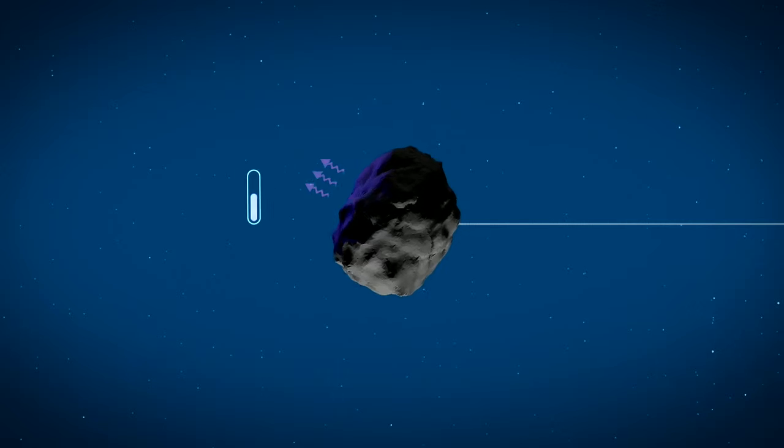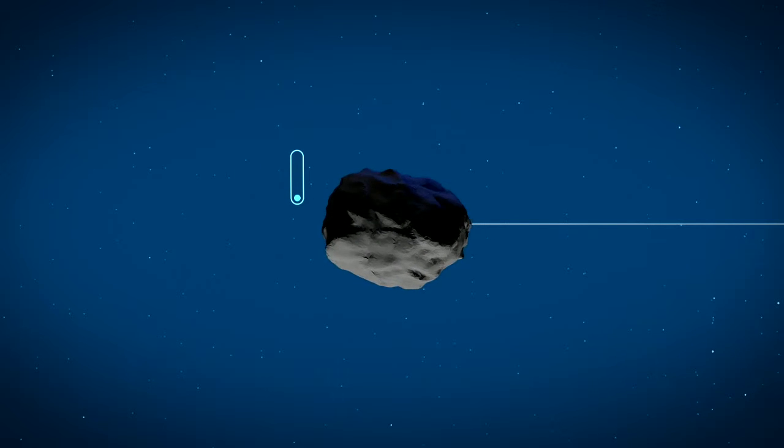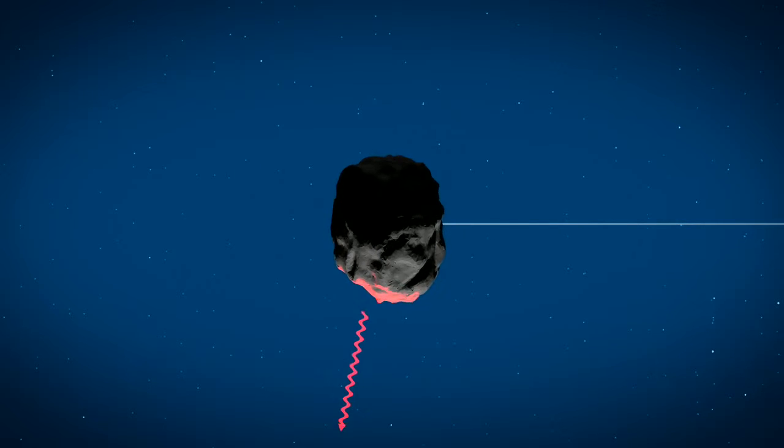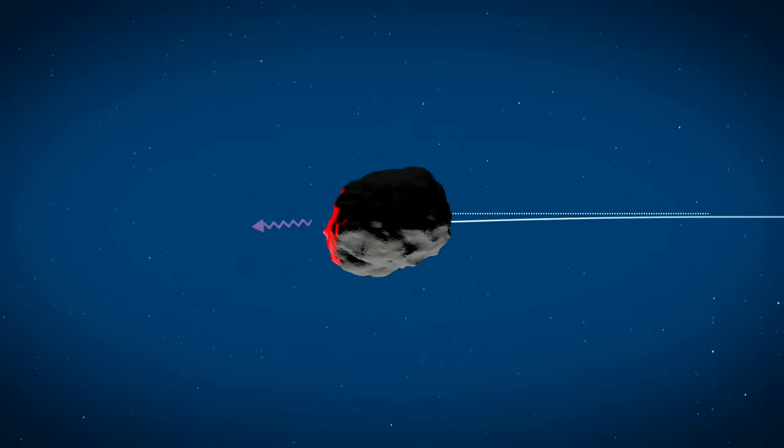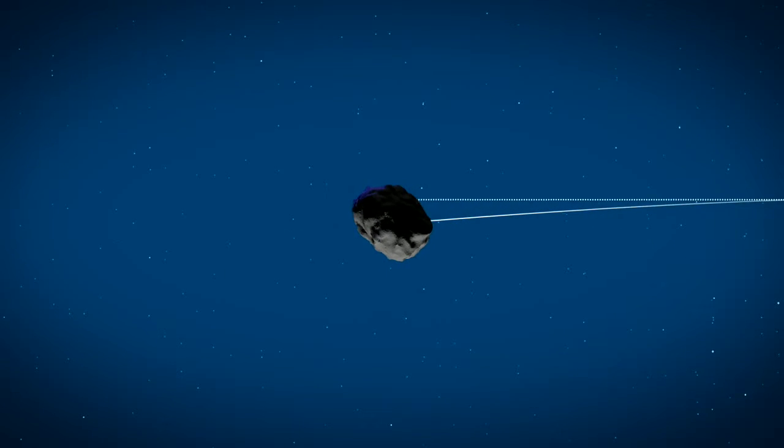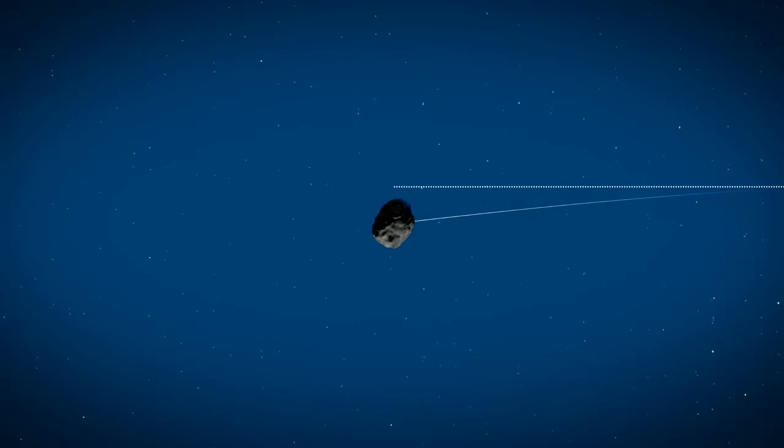During the night, however, the surface cools down, emitting the heat it absorbed as radiation. This radiation exerts a force on the asteroid, acting as a sort of mini-thruster that can slowly change the asteroid's direction over time.